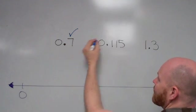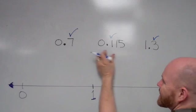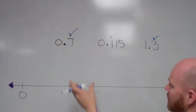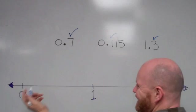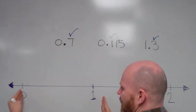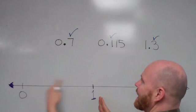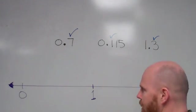Now this 7, this 1, and this 3, these are in the 10th place. And basically for the 0.7, what that means is you need to cut the interval from 0 to 1 into 10 equal-sized pieces.